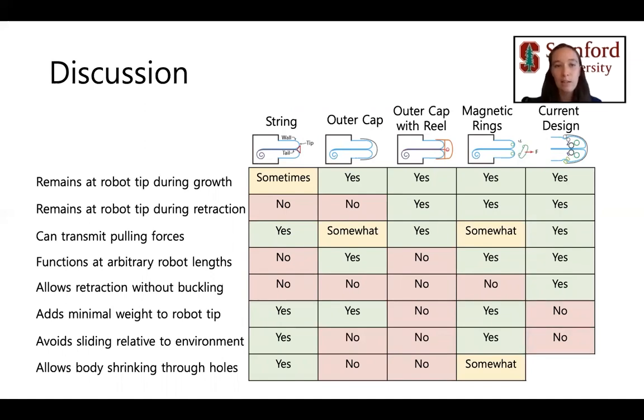Second, it slides relative to the environment during growth and retraction, which means that friction with the environment plays a role in robot movement cost, unlike soft growing robots without a tip mount. Third, due to the rigid outer cap, the robot body cannot deform to pass through holes smaller than its body diameter, like soft growing robots without a tip mount can do.